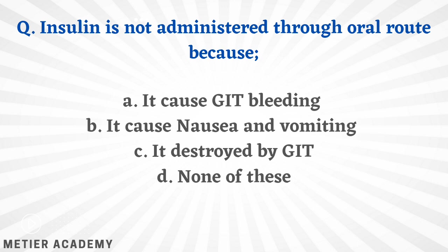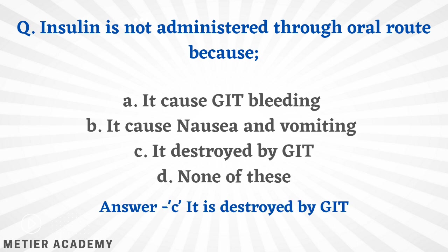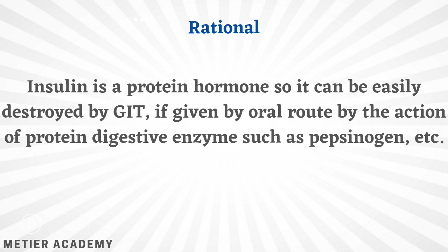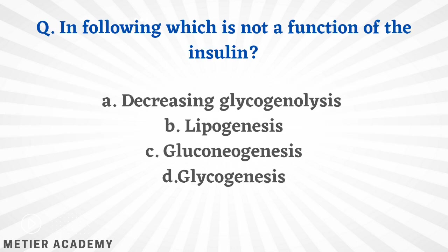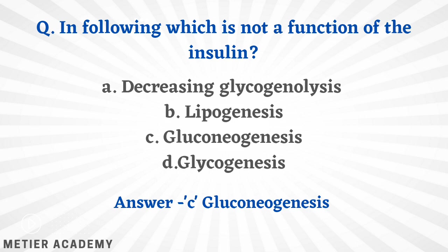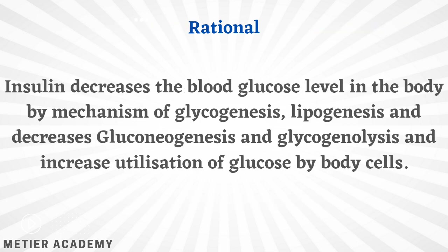Next: insulin is not administered orally because — it causes GI tract bleeding, causes nausea and vomiting, is destroyed by the gastrointestinal tract, or none of these? The correct answer is option C — it is destroyed by the GI tract. Insulin is a protein hormone and can be destroyed by the GI enzyme pepsinogen. Next: which is NOT a function of insulin — decreasing glycogenolysis, lipogenesis, gluconeogenesis, or glycogenesis? The correct answer is option C, gluconeogenesis. Insulin decreases blood glucose via glycogenesis, lipogenesis, and by decreasing glycogenolysis and gluconeogenesis.